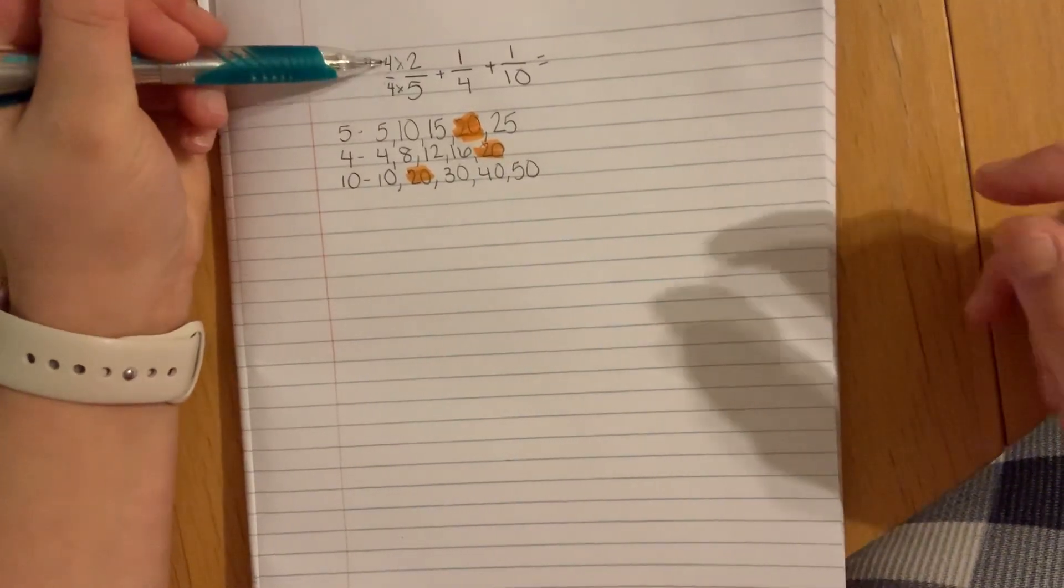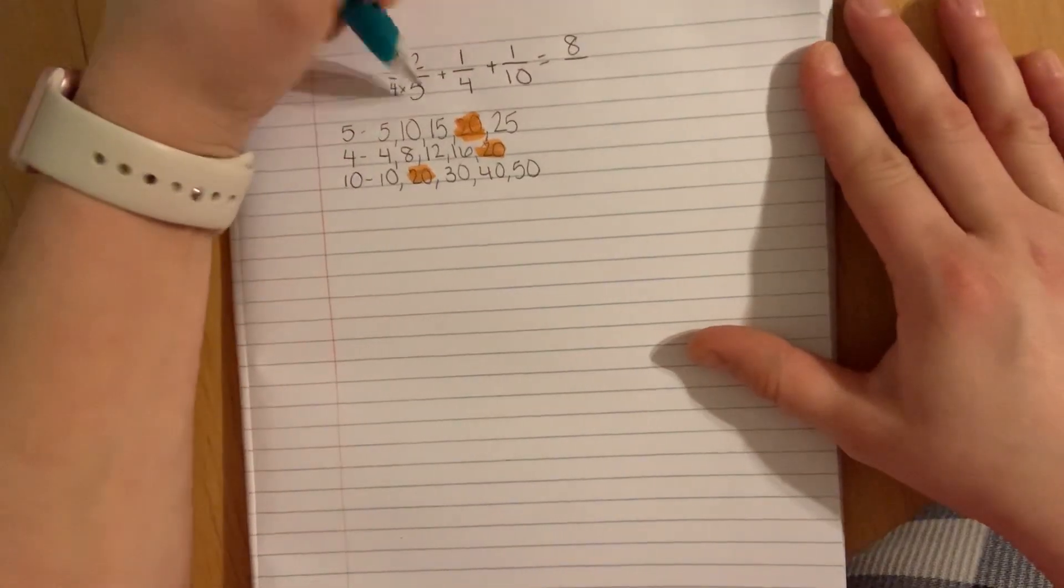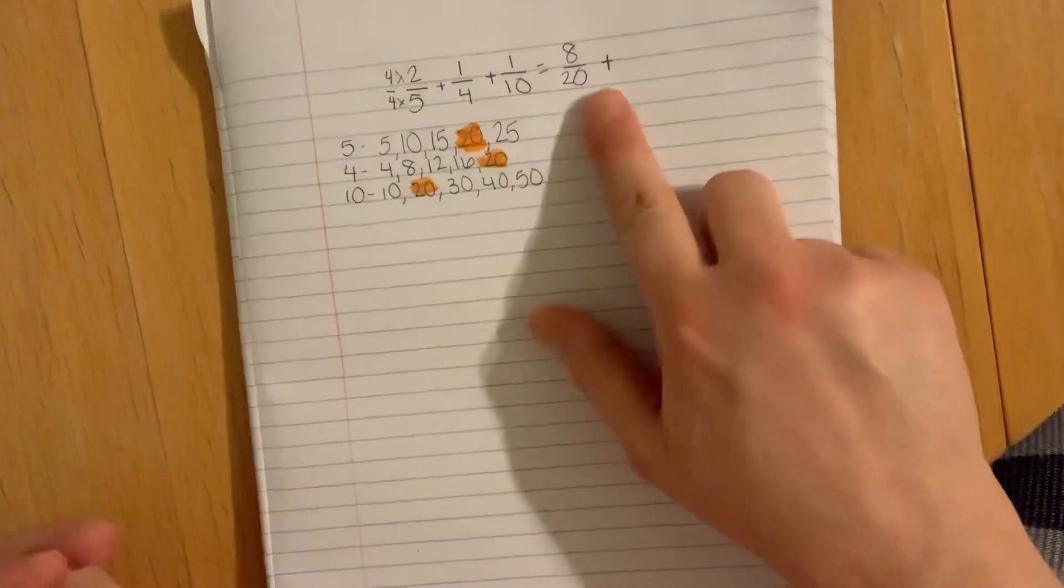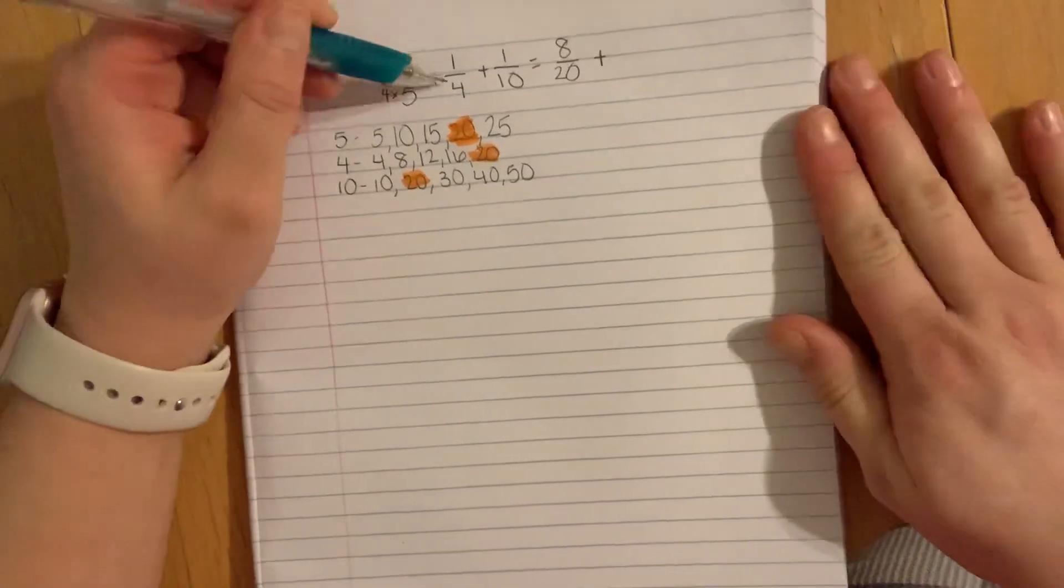4 times 2 is 8. 4 times 5 is 20. We have our first fraction renamed for addition.